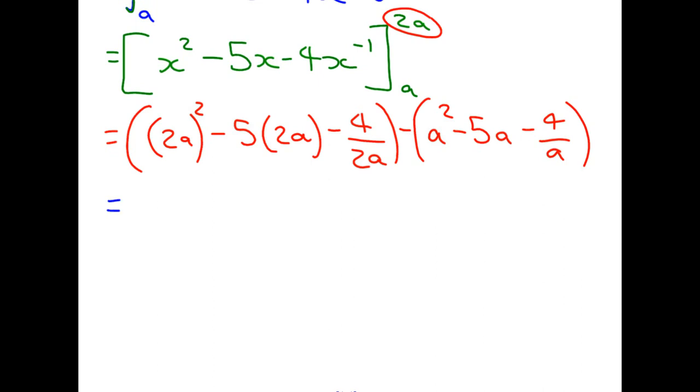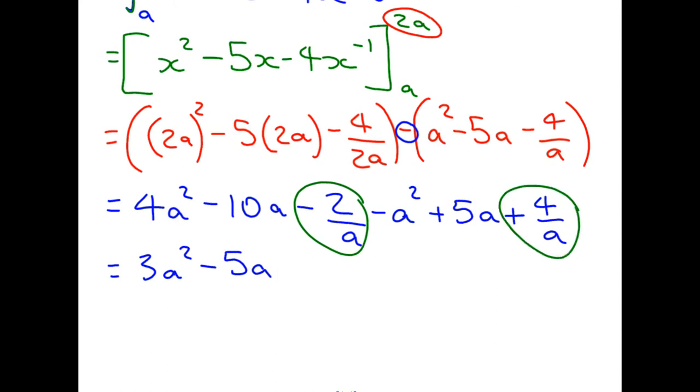This is now going to have to be simplified. So, we get, from the first bracket, 4A squared, being careful to square the 2 as well, minus 10A minus 2 over A. And this negative means all the signs are going to swap in the bracket. Minus A squared plus 5A plus 4 over A. When we simplify this, we basically have to collect like terms. We get 3A squared minus 5A.